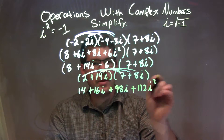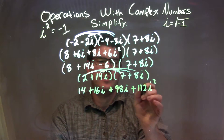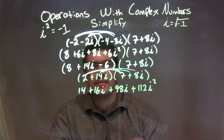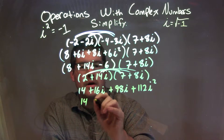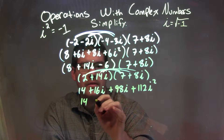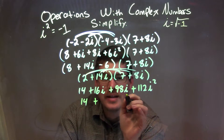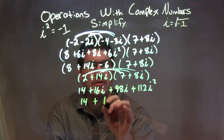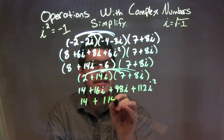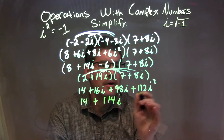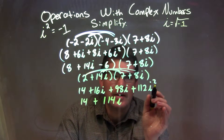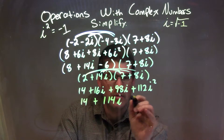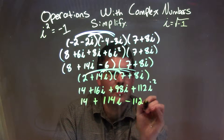And then 14i times 8i — 14 times 8 is 112, so we have plus 112i squared. So let's combine these. We have 14 here, plus 16i and 98i is 114i. And i squared is negative 1, so negative 1 times 112 is negative 112.